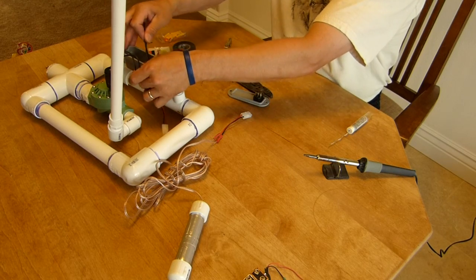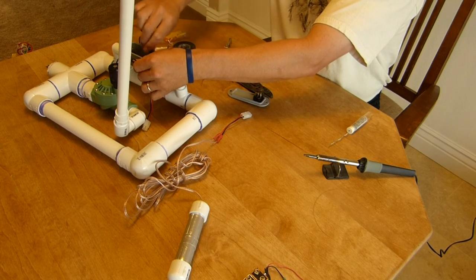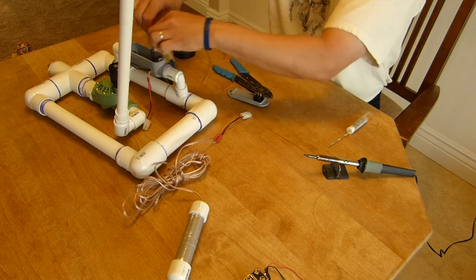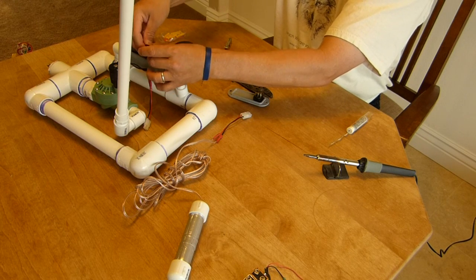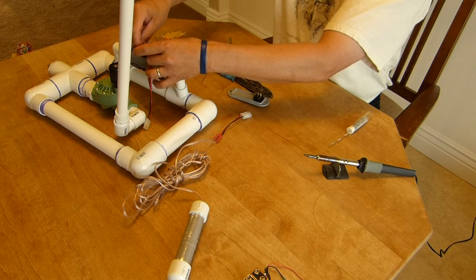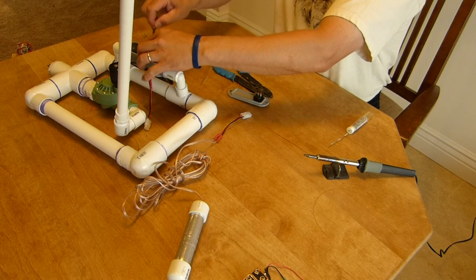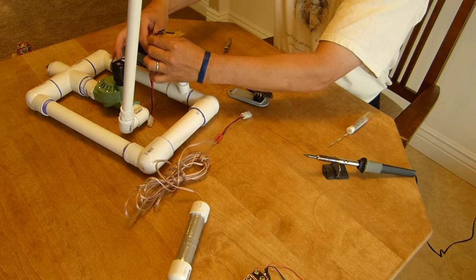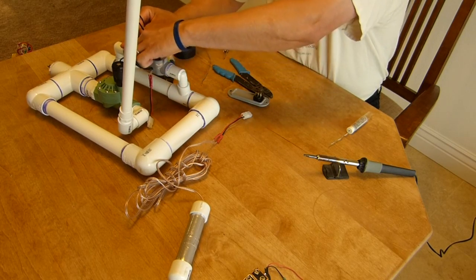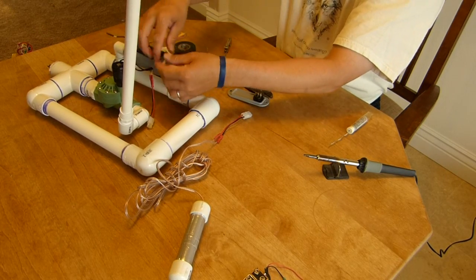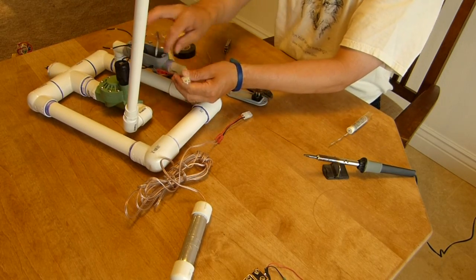And I'm going to do the same with these solenoid wires. I don't want them pulling out either. So I'll put it in and make a knot. So I have a little slack right there. Not too much there. Just a little bit of slack there.